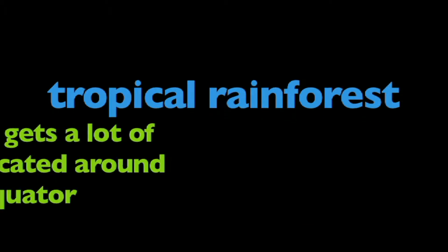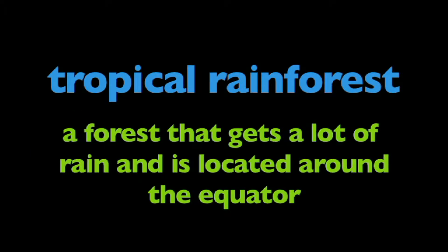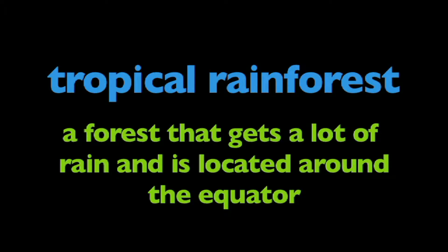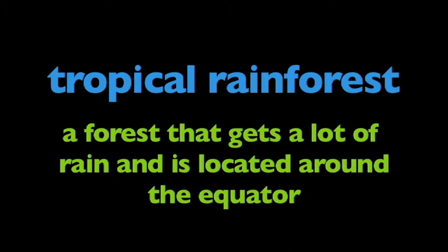In this program, we're going to learn about tropical rainforests. What is a tropical rainforest? A tropical rainforest is a forest that gets a lot of rain and is located around the equator.